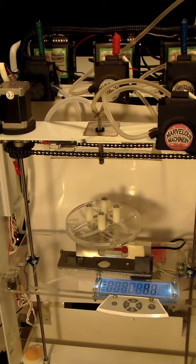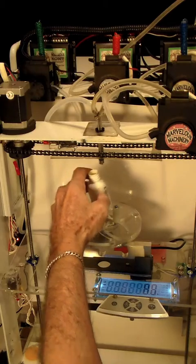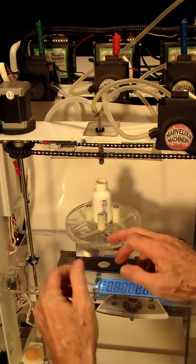First thing you do after your label's printed is scan the label into the system and place the bottle into the holder and lock it down.